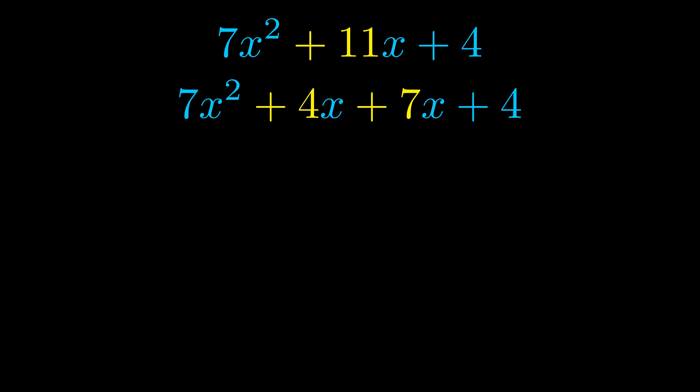Once we've done this, we go ahead and put parentheses around the first term and the last term. And we do that so that we can take the greatest common factor out of both terms.